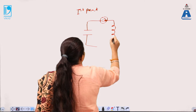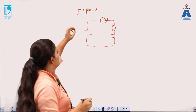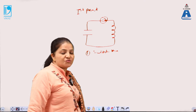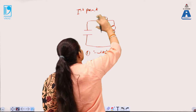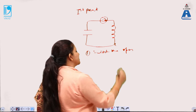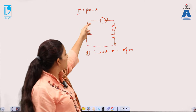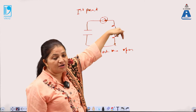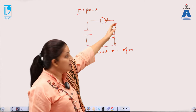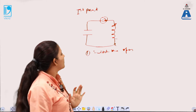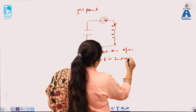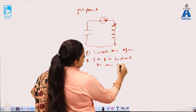Now let us understand the first part. When the DC power supply is on, there are two cases: first, the switch is open, and second, the switch is closed. When the switch is open, current flows through the inductor coil L, and due to that flow of current an EMF is induced in the coil. The coil gets charged — positive on one side, negative on the other.